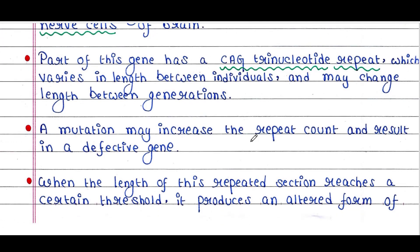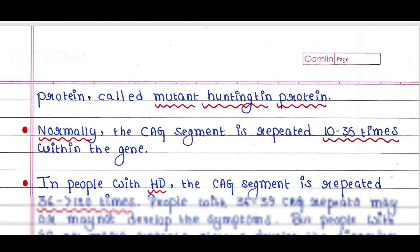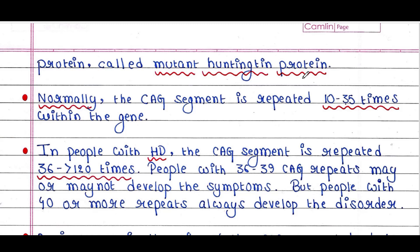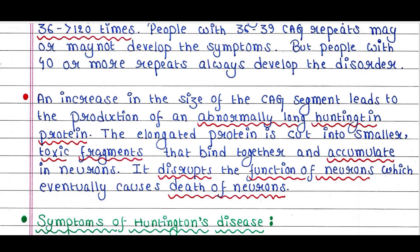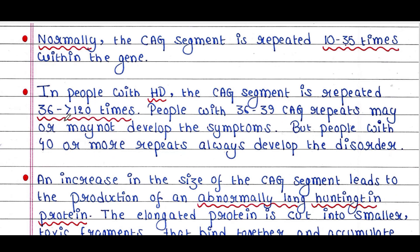A mutation may increase the repeat count and result in a defective gene. When the length of this repeated section reaches a certain threshold, it produces an altered form of protein called mutant huntingtin protein. Normally, the CAG segment is repeated 10 to 35 times within the gene. In people with Huntington's disease, the CAG segment is repeated 36 to more than 120 times. People with 36 to 39 CAG repeats may or may not develop symptoms, but people with 40 or more repeats always develop the disorder.